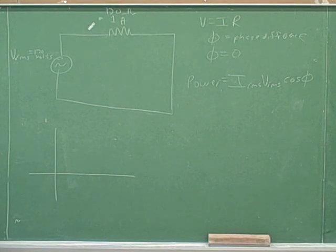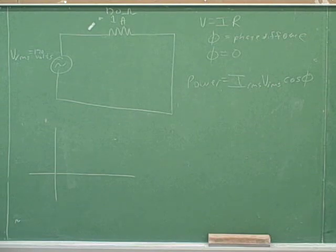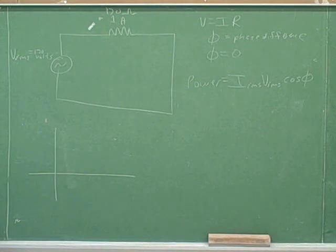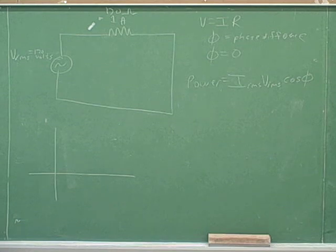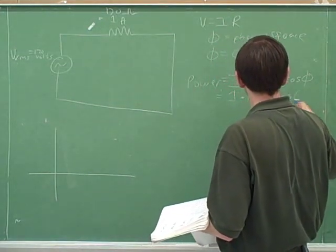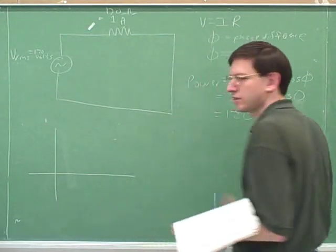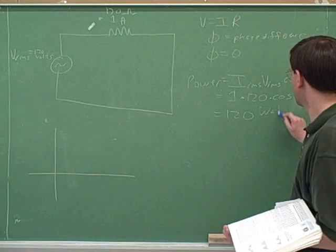Let's try part C. The cosine isn't zero — phi is zero, so cosine of phi equals one. So the power equation simplifies, and it's just the straightforward product once the cosine factor equals one.